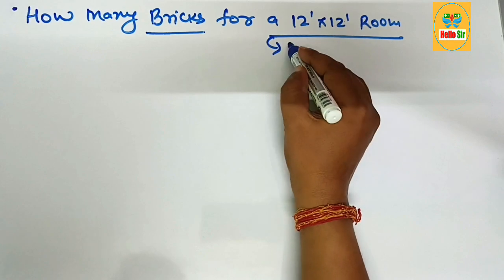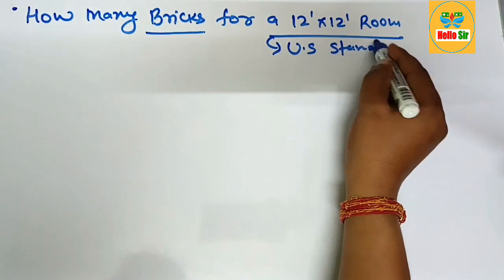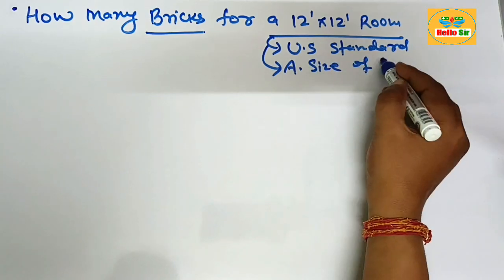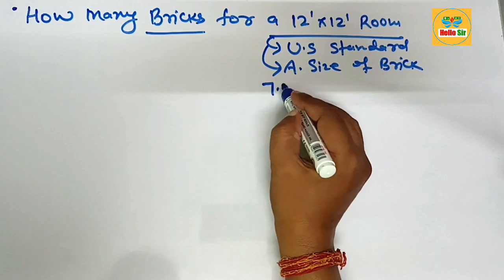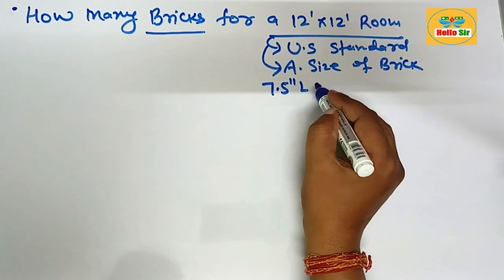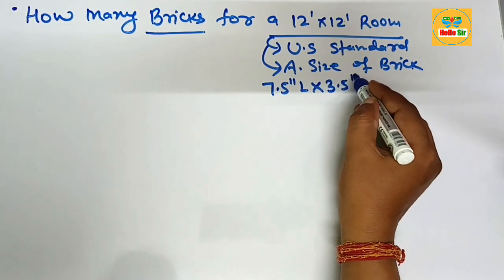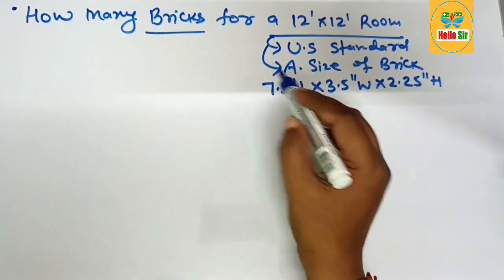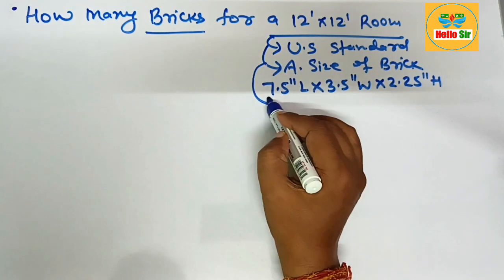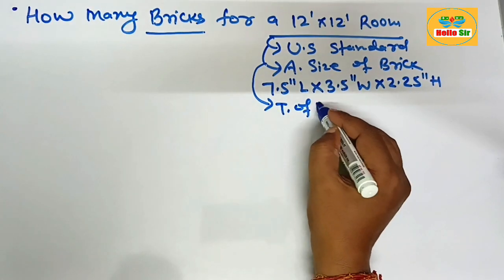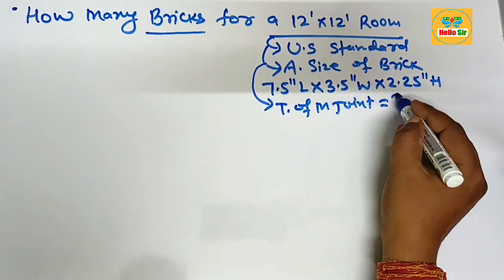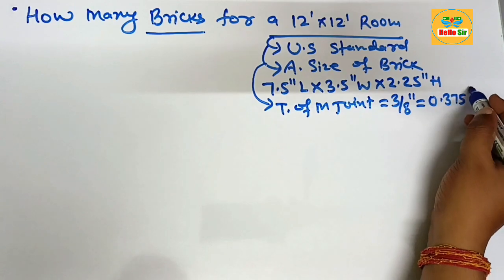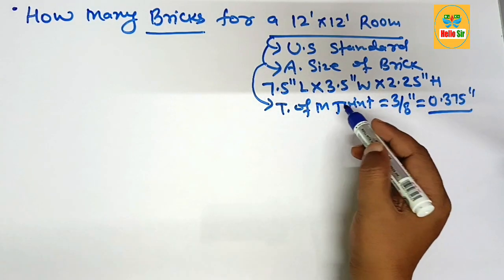As per United States practice, the actual size of brick is about 7.5 inches in length, 3.5 inches in width, and 2.25 inches in height. This is the actual size of brick as per United States practice. The thickness of mortar joint is about 3/8 inches, that is equal to 0.375 inches.